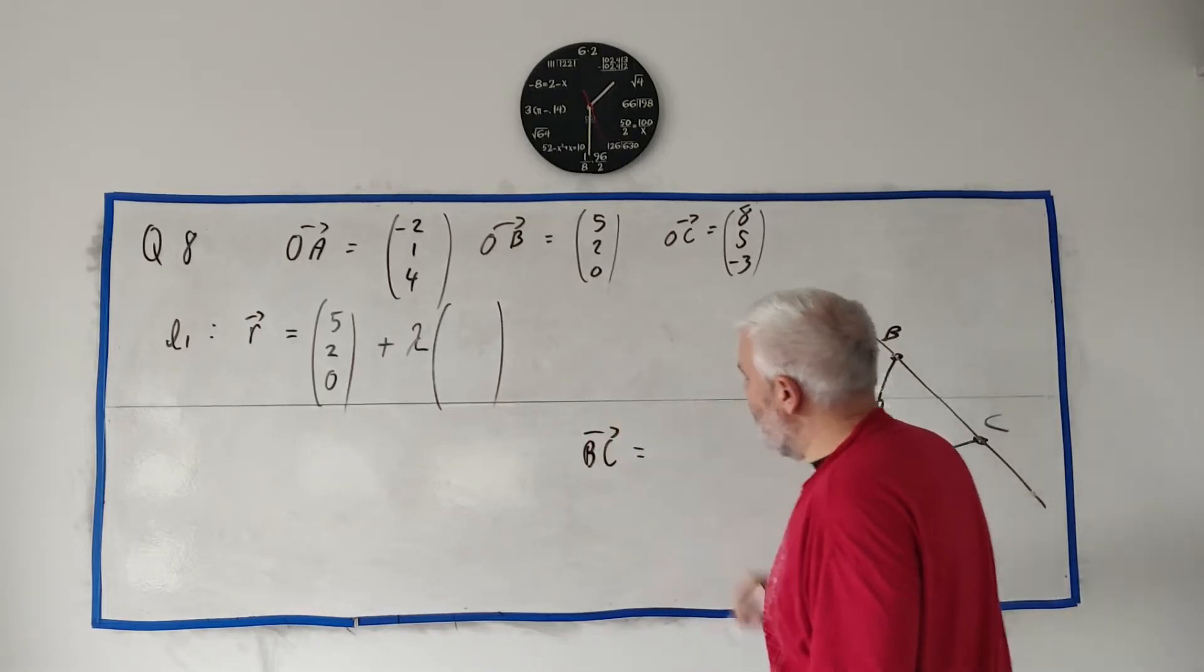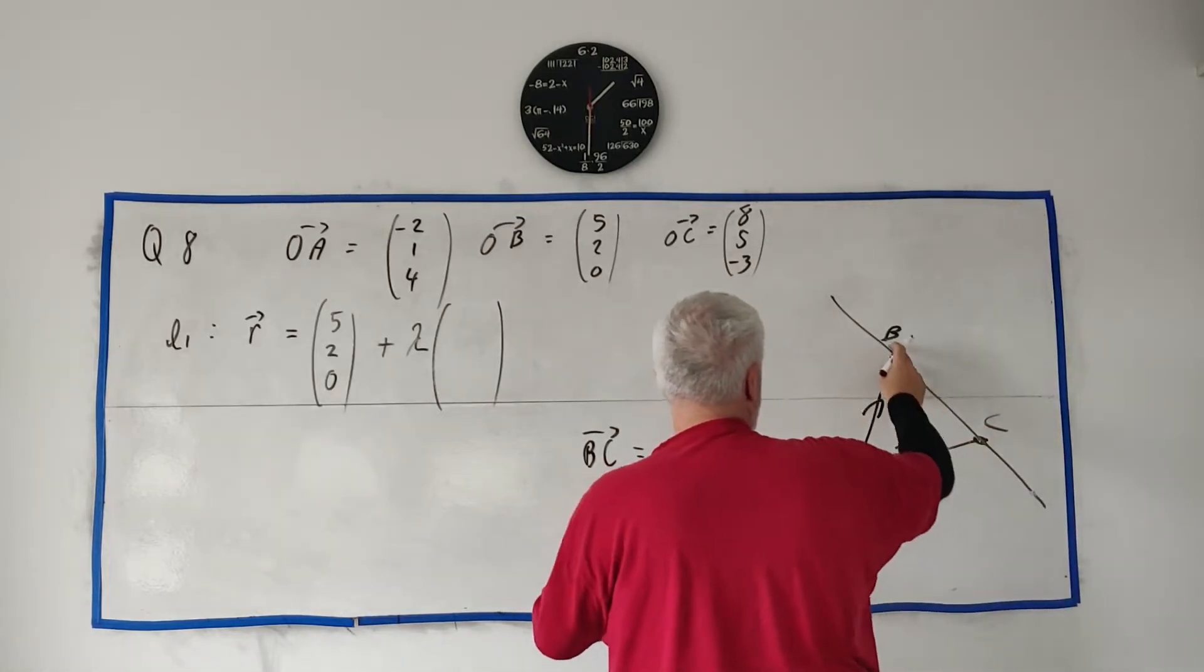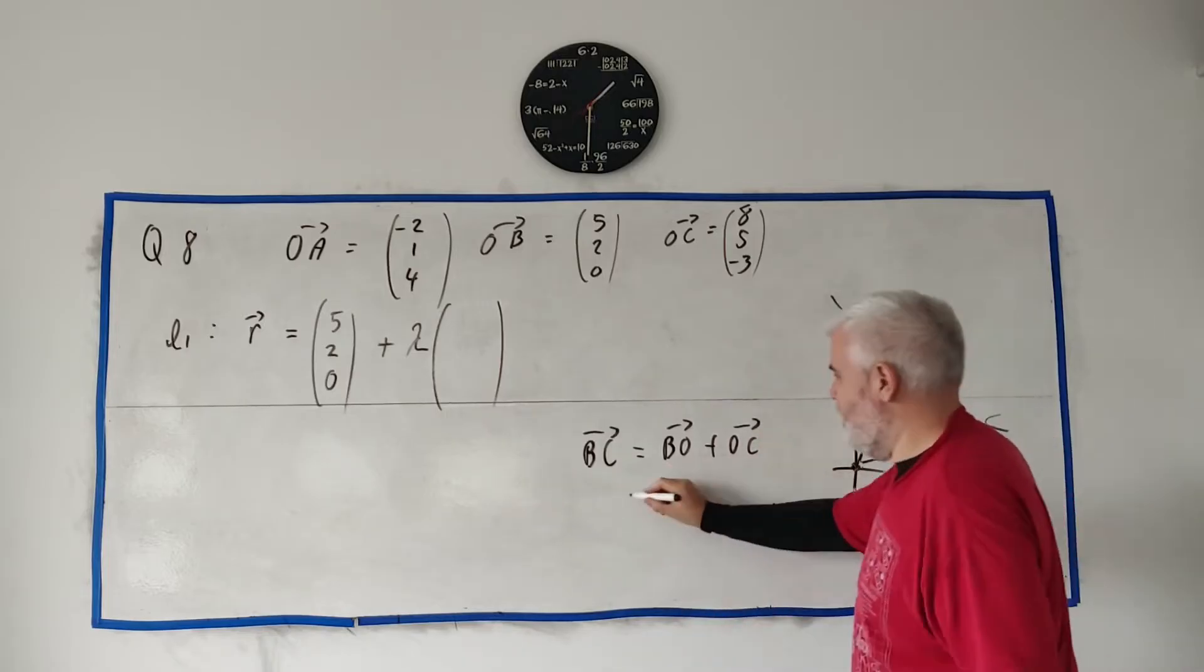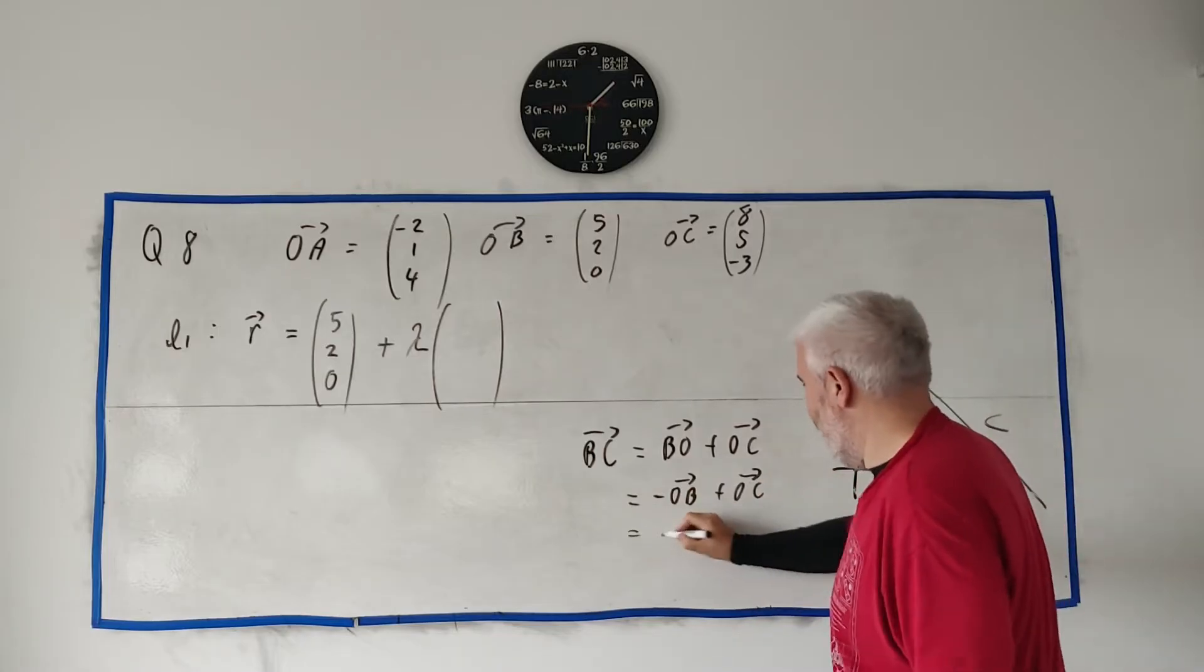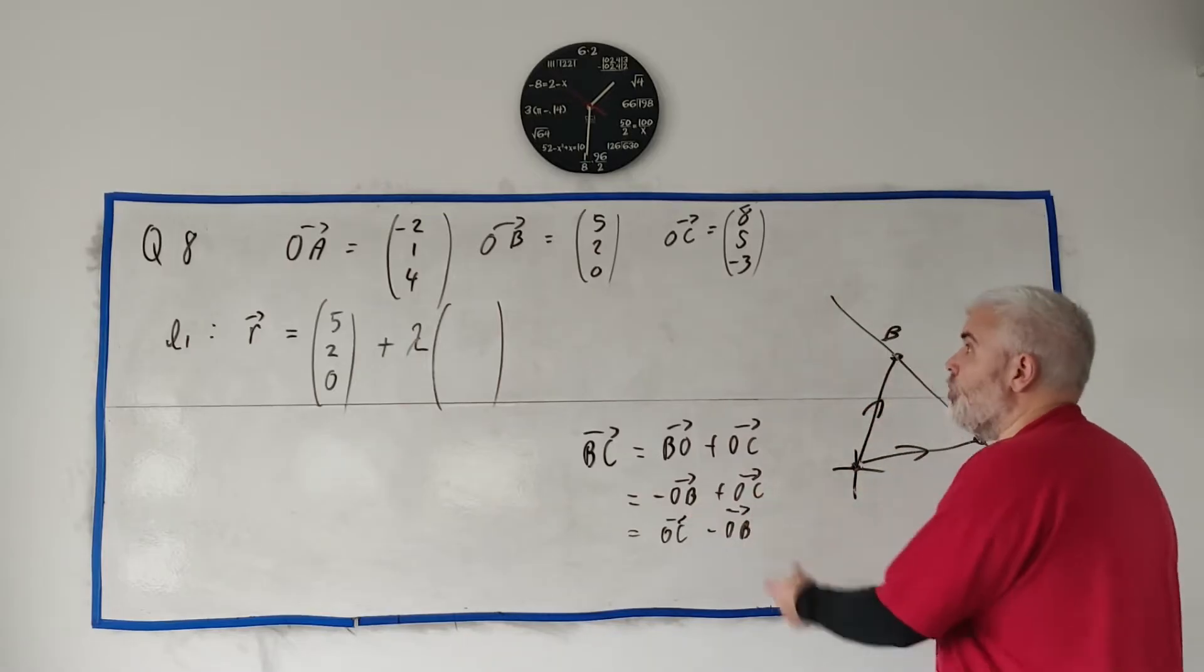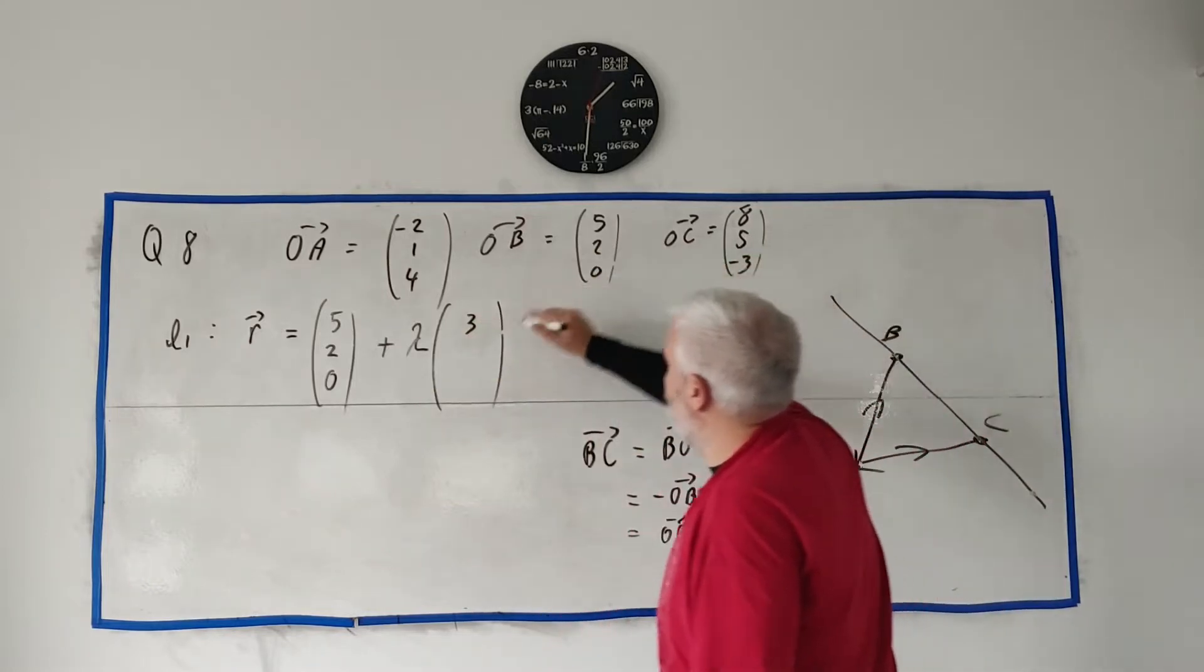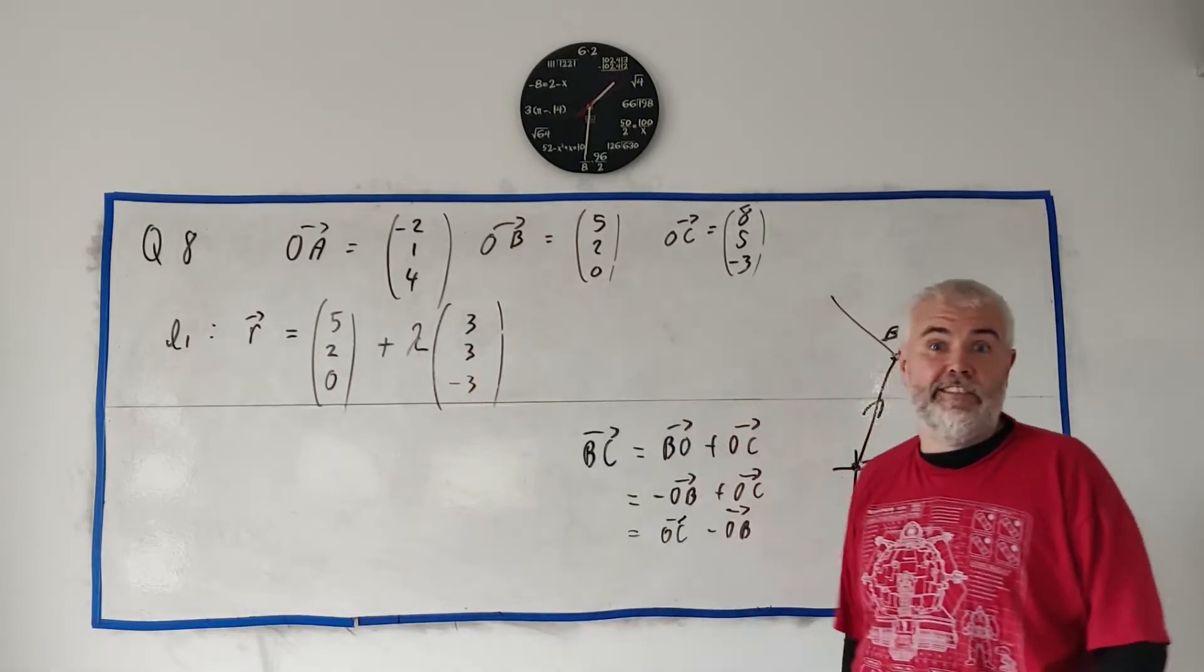We start at 0, we get onto the line. So find a vector that gets you to the line. So either of these vectors will do. Let's just pick B. So BC is equal to, how do you get from B to C? One way is to go from B to O, and then go plus O to C. Or that's also the same as writing OC minus OB. So what's OC minus OB? 8 minus 5 is 3, 5 minus 2 is 3, 3 minus 0 is minus 3. And that's your answer to part 8.